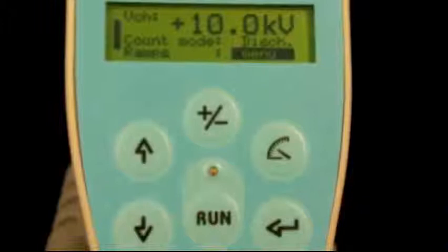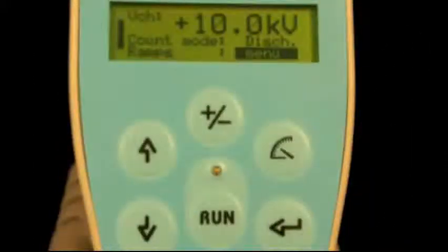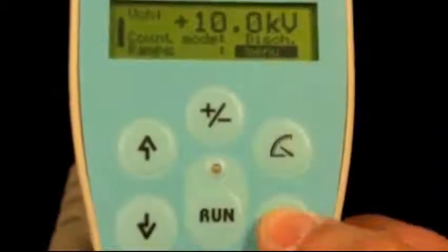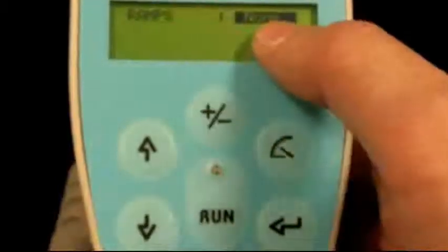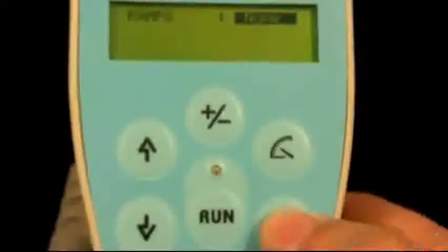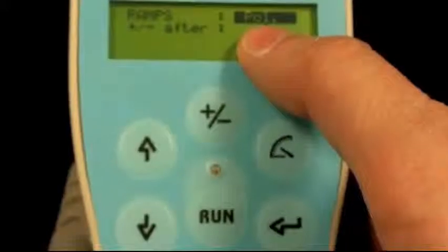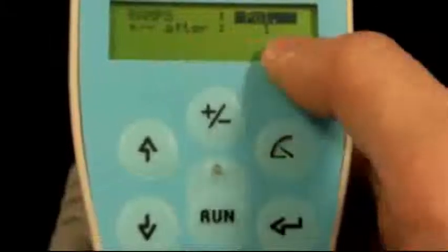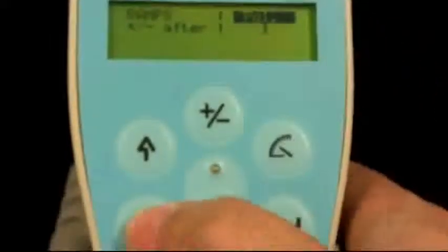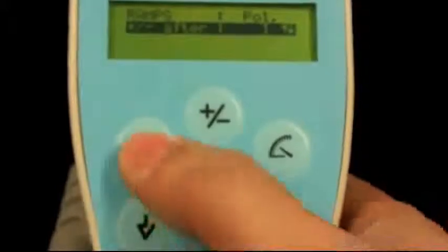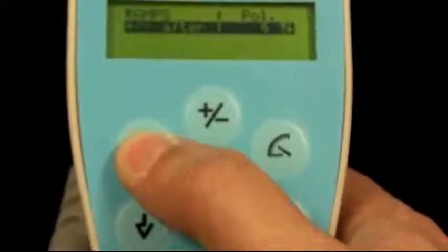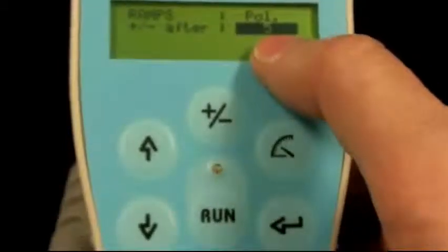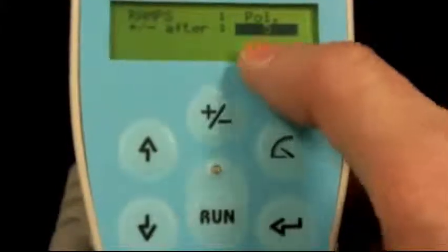Arrow down. The next option is ramps. If you hit the enter button, it will take you into the ramp function. Right now none is selected. If you hit the enter button, it will switch over to polarity. This means that after x amount of pulses, it will switch polarity. Right now it's set to 1. But you can arrow down, select enter again, and you can change the number of pulses before it will change polarity. Like in this example, we've selected 5 pulses. So after every 5 pulses, it will switch polarity.